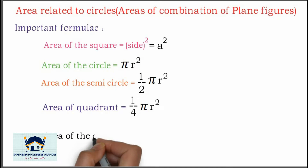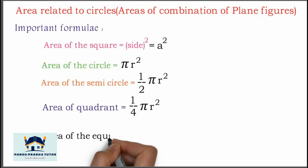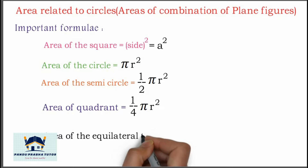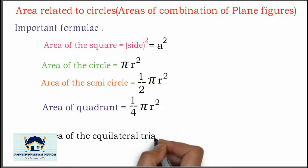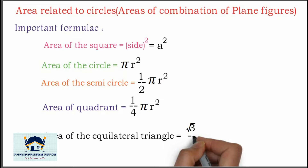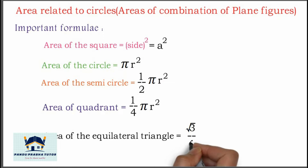Area of an equilateral triangle is equal to root 3 divided by 4, into A squared.